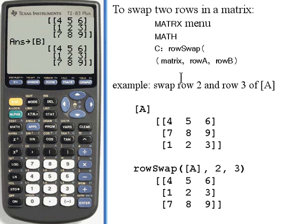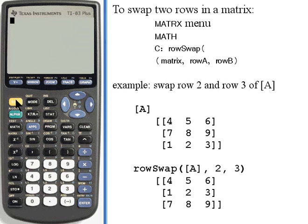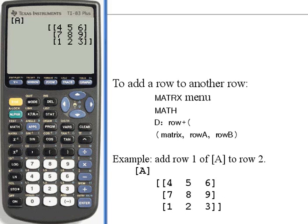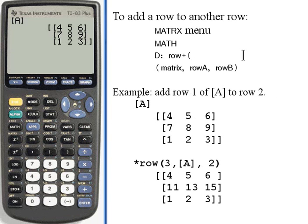So for row swap, once again, tell the calculator the name of the matrix—that's something we always do when dealing with matrices—and the numbers of the two rows that we're going to swap. Let's clear this, display the matrix again, matrix A, and go on and see about adding a row to another row.